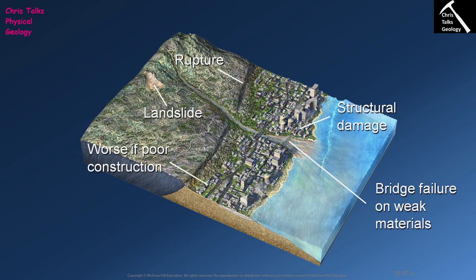In contrast, you walk up to the cubic meter of granite and punch it — there's a chance you might break your knuckles. The granite is not going to respond; it's too solid and too robust. So typically the more poorly consolidated your material is — and sediments are particularly bad for this — the more likely they are to move in response to an earthquake.